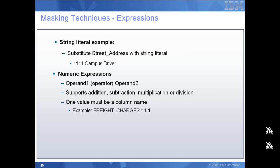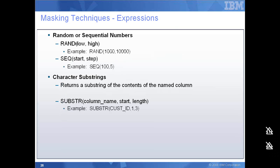I can also use numeric expressions wherein I modify the values using a variety of mathematical operations like addition, subtraction, multiplication, or division. The other values used in the numeric expression have to be a column name. Other examples of expressions include random or sequential numbers. I can make use of built-in functions like random and sequential, wherein I can specify how the random number is calculated. I can also use a character substring.